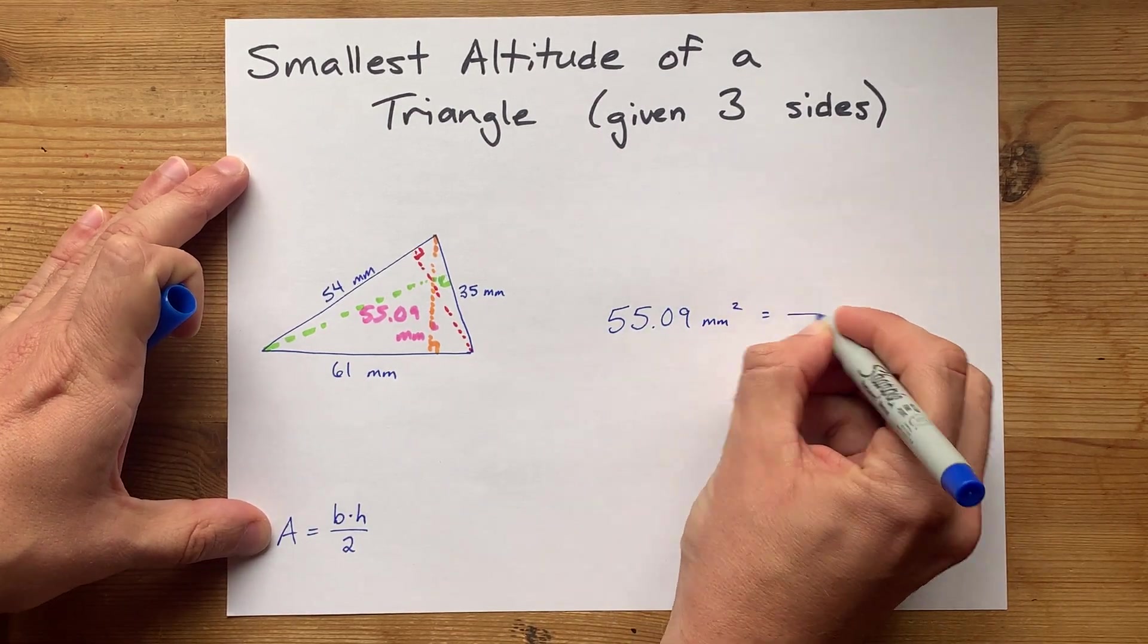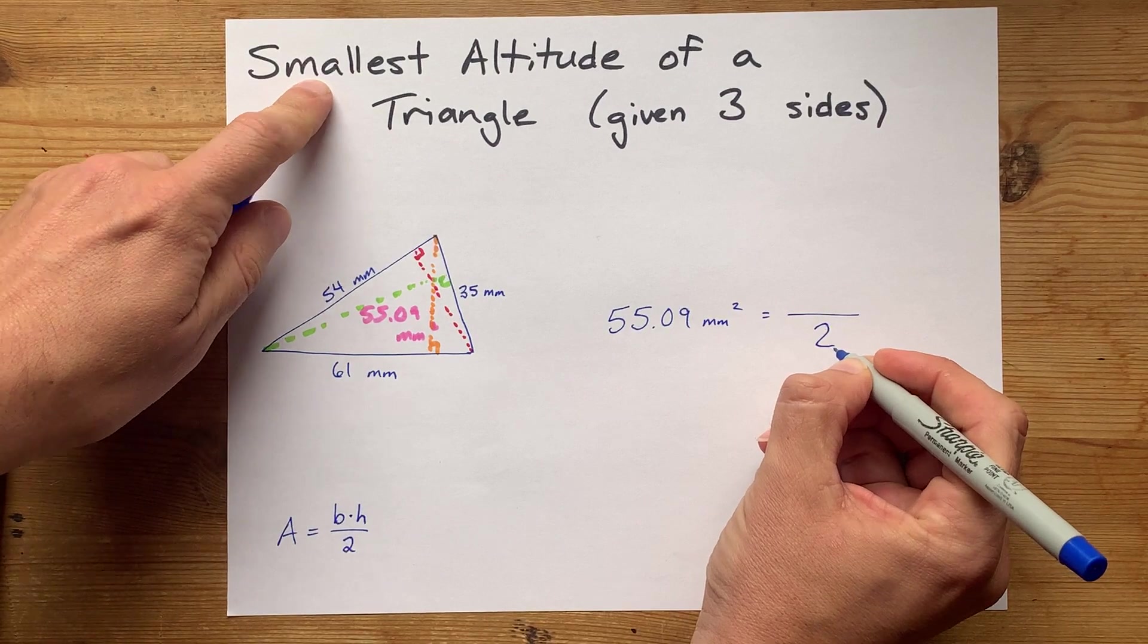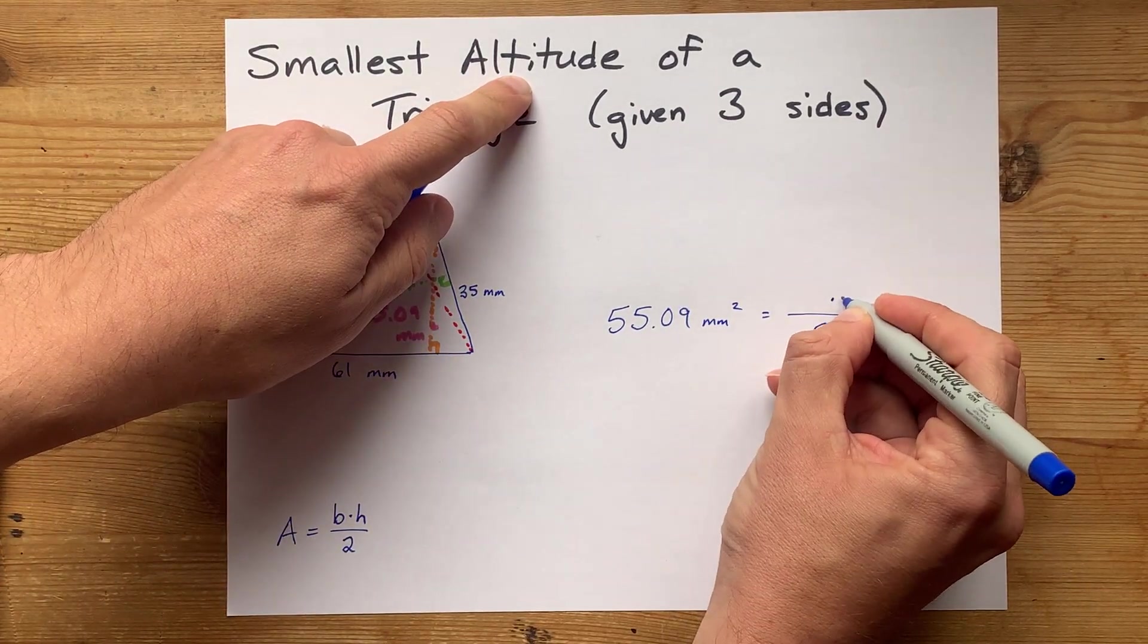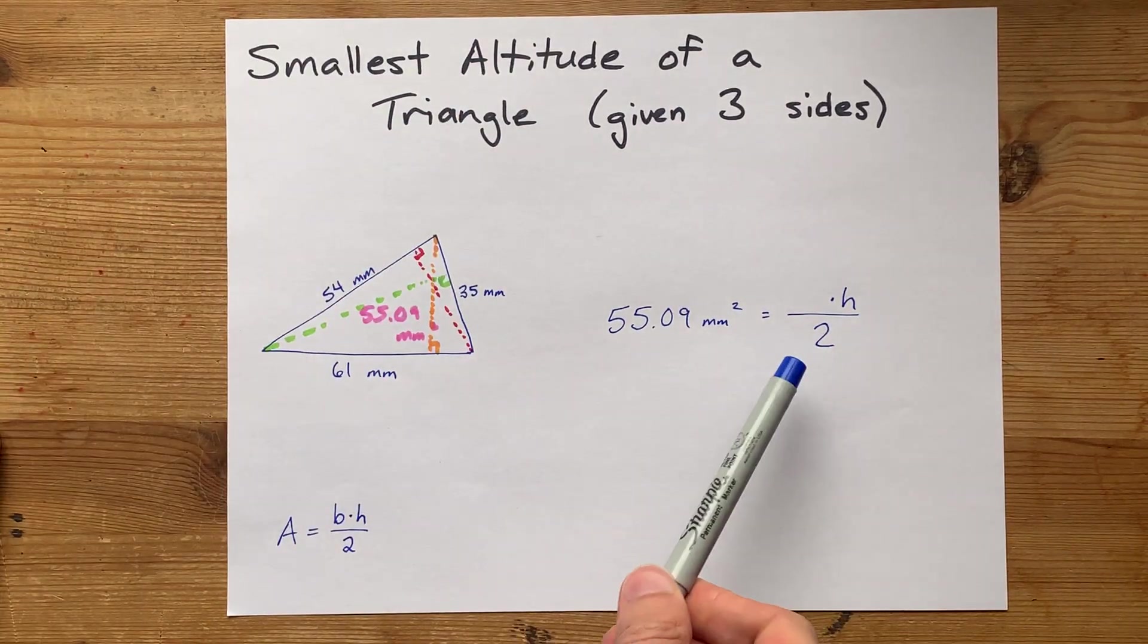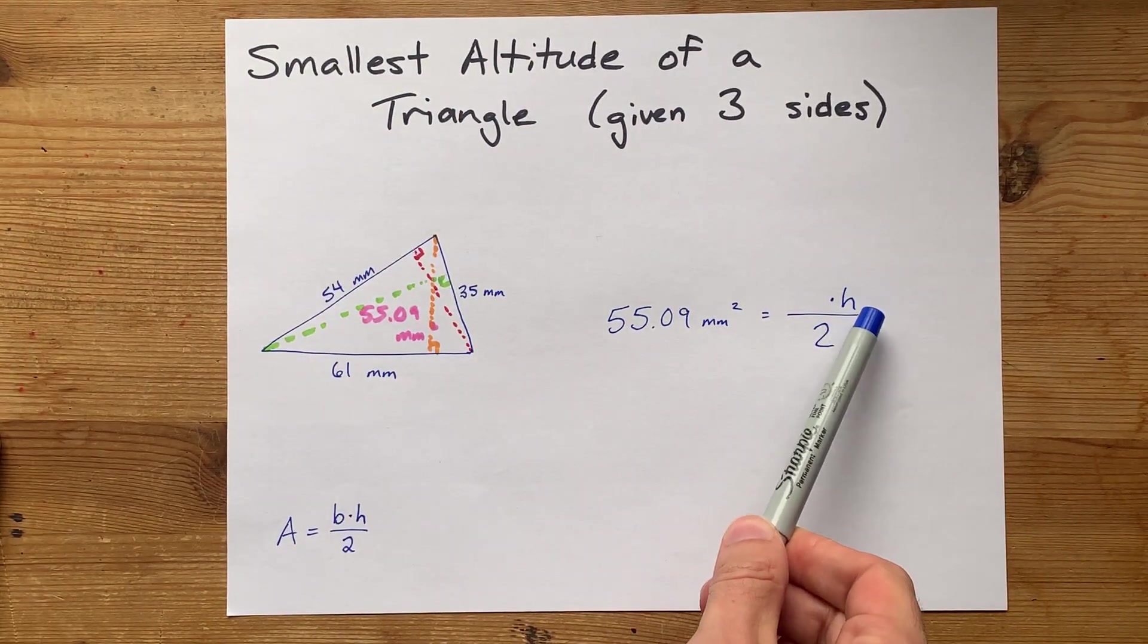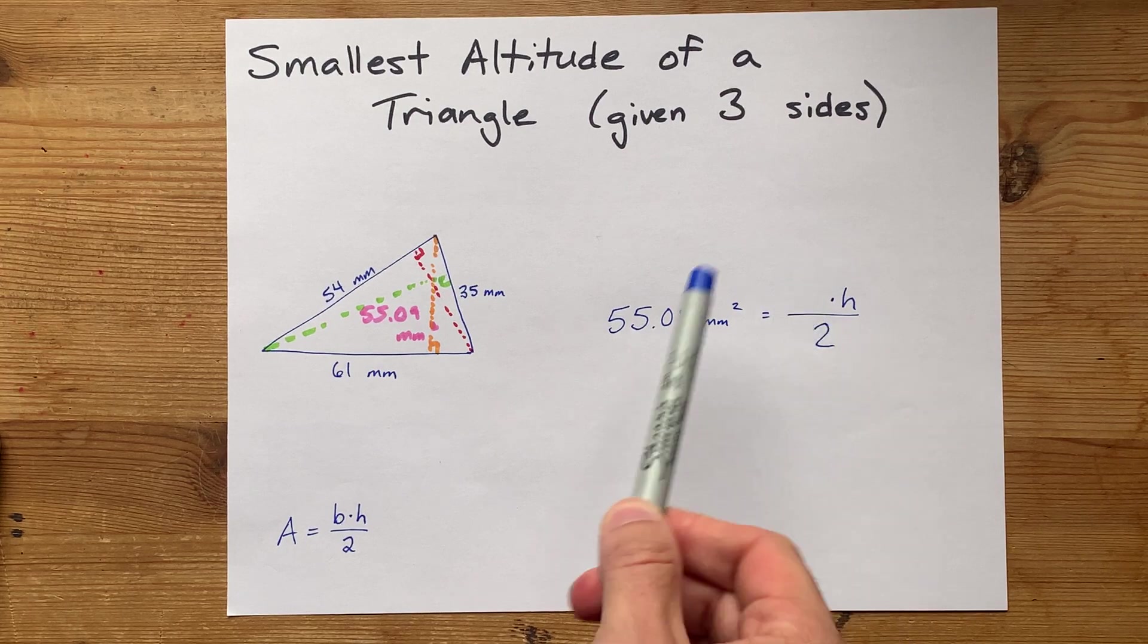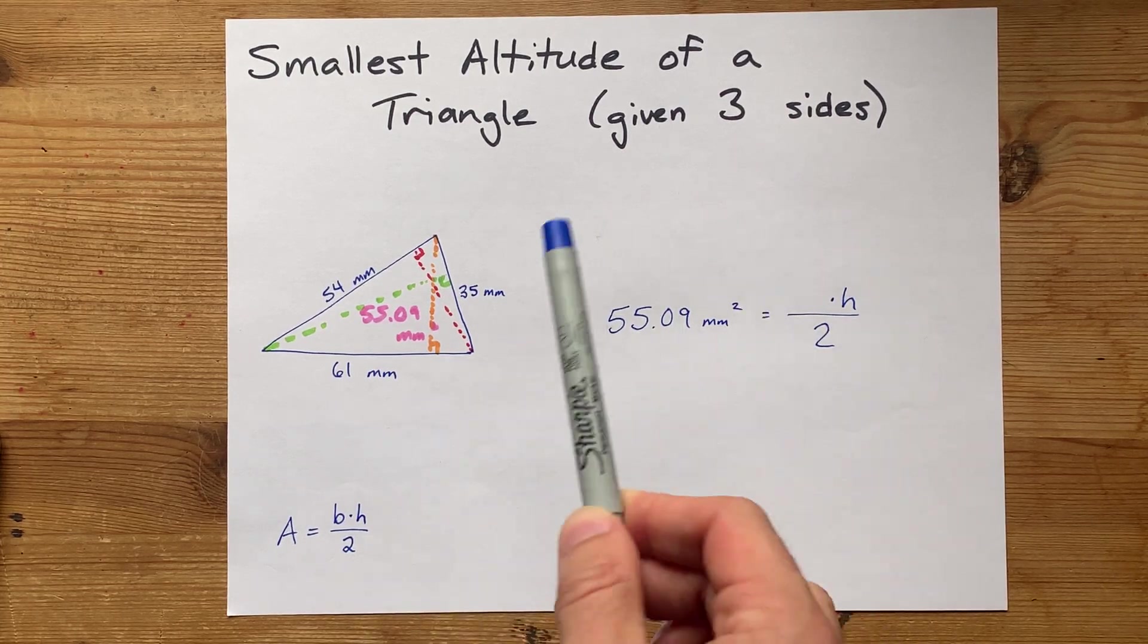And we want to find the smallest altitude. We're trying to find H that is as small as can be. In order to make H as small as can be, we need the base to be as large as it can be to compensate.